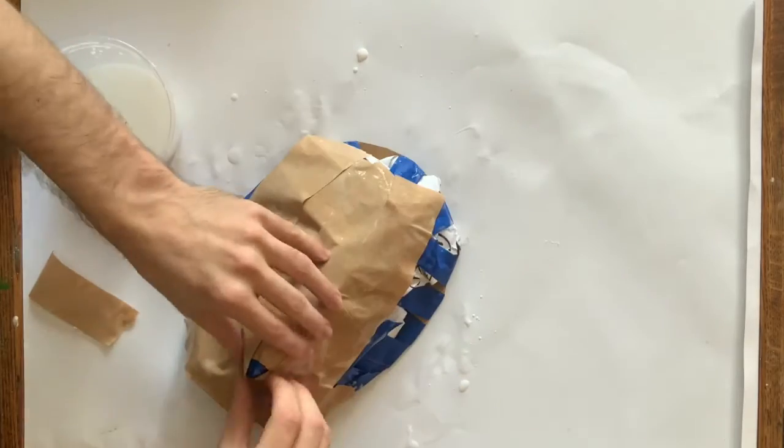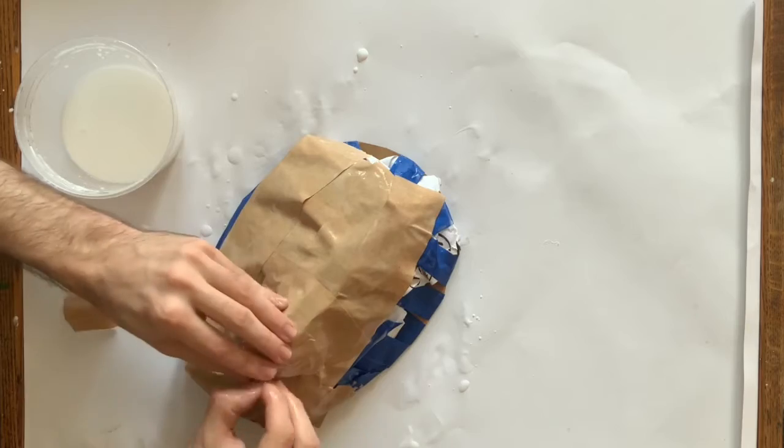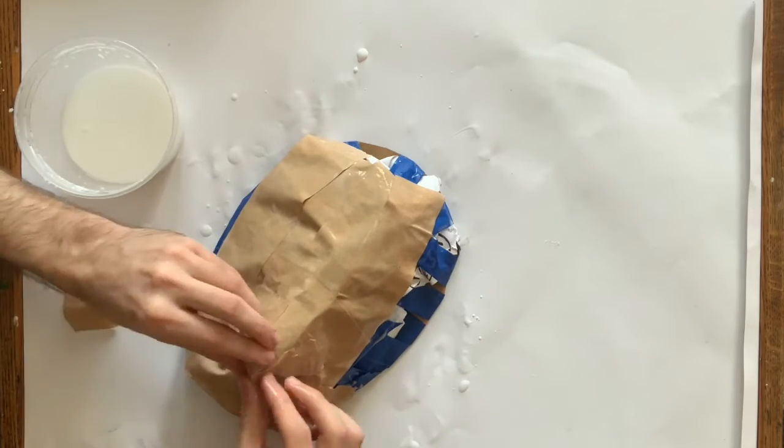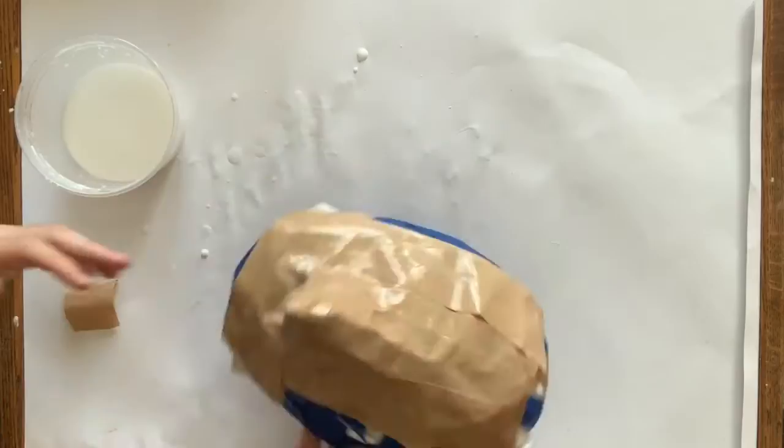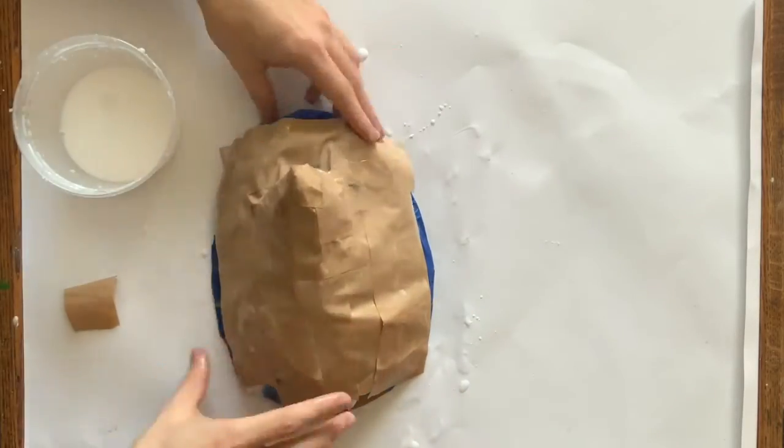I squeeze off, using my fingers, some of that excess liquid, and then I lay it over the form that I created and sort of gently smooth out all the edges and creases from the paper.